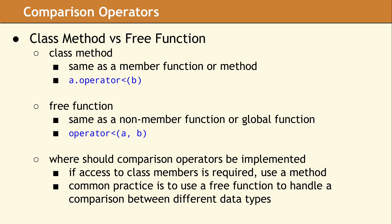A comparison operator can be implemented as a class method or a free function. As a reminder, in C++ the terms class method, member function, and method are often used interchangeably. When a comparison operator is implemented as a class method, the leftmost argument denotes which object to call the operator method on. In our first line of code, the operator less than method must belong to the class for object A. The parameter, which is B, will be compared to some data value in object A.